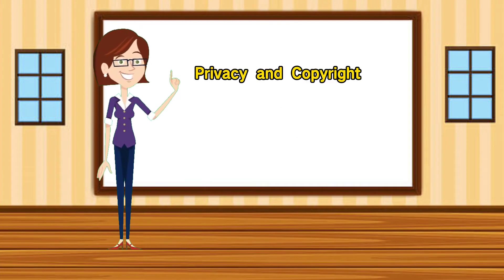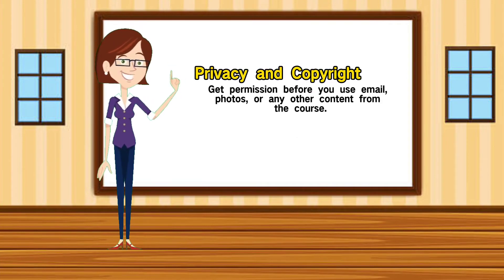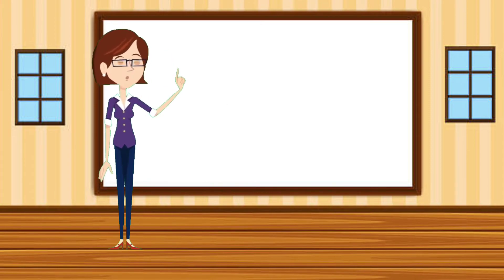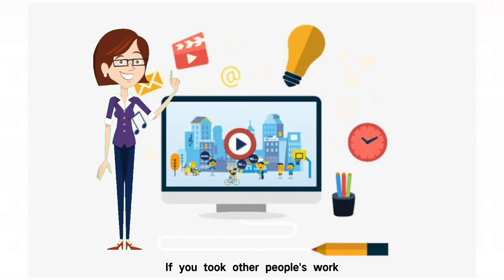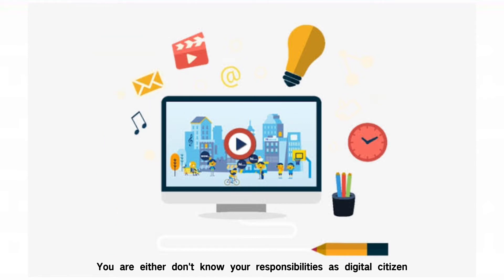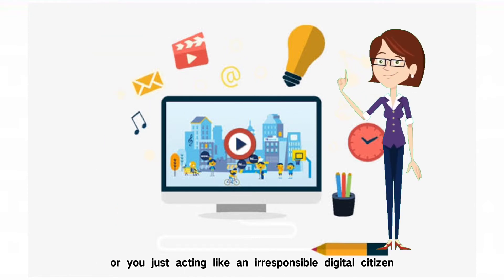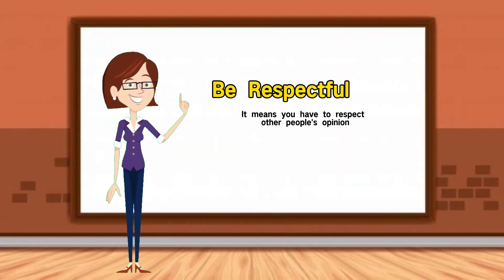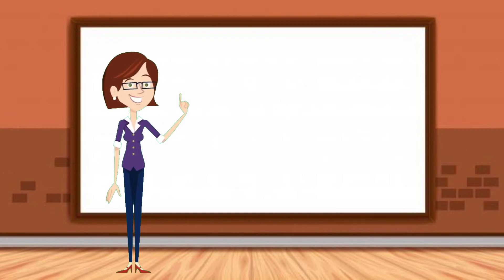Second is privacy and copyright. It means get permission before you use emails, photos, or any other content from the course. If you take other people's work, you either don't know your responsibilities as a digital citizen, or you are acting like an irresponsible digital citizen.